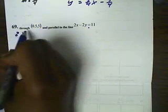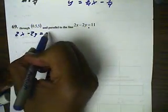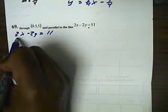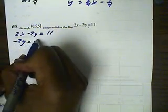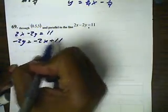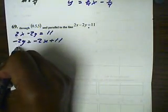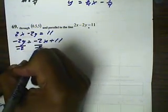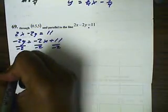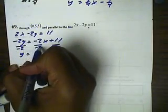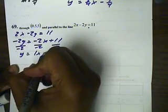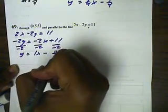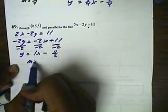So, 2x minus 2y equals 11. We'll move the 2x to the other side by subtracting 2x, so we'll get a negative 2x plus 11. Then we'll divide everything by that negative 2 here, and that'll isolate the y. So, we'll get y equals, divided by negative is positive, 1x minus 11 over 2. So, my slope is 1.